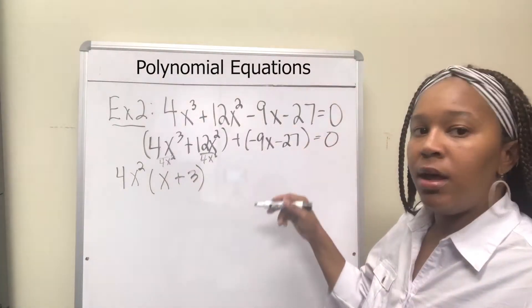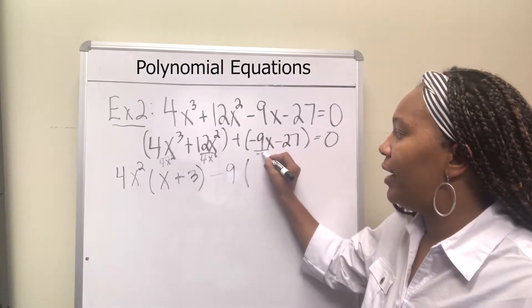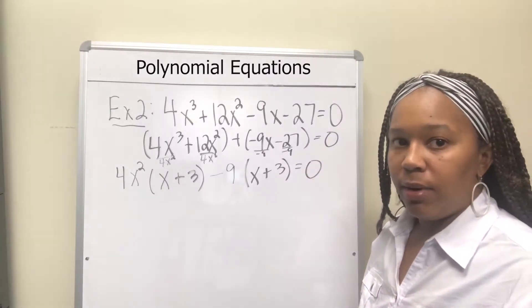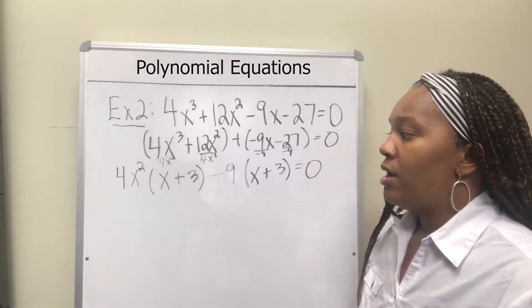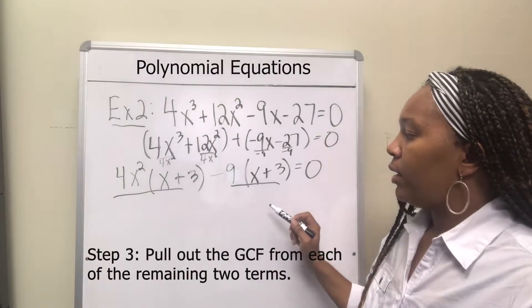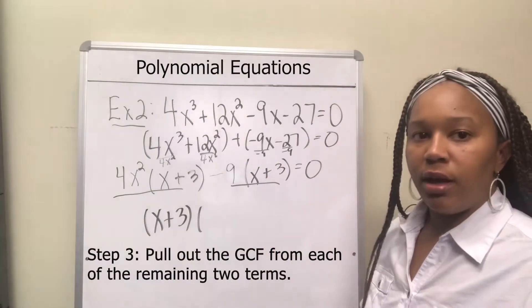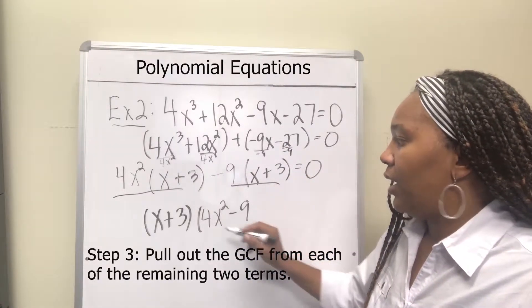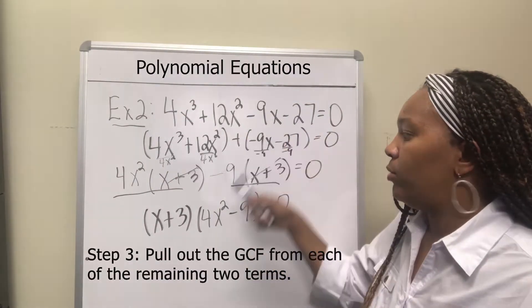The goal of factoring by grouping is to get the expressions inside both parentheses to match. Step three: pull out the common factor from the two remaining terms. Both terms contain (x + 3), so pull that out. What's left is 4x² from the first term and −9 from the second, giving us (x + 3)(4x² − 9). We've correctly factored the polynomial using factor by grouping.